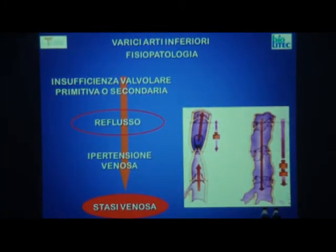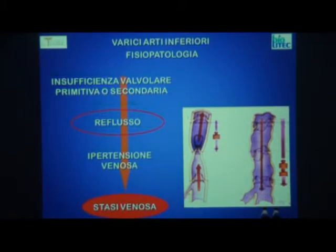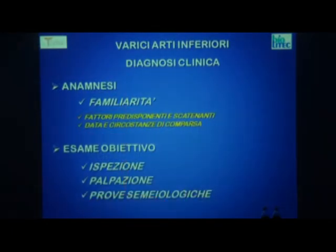Che cosa succede? Quando c'è un'insufficienza valvolare che possa essere primitiva o secondaria, per esempio ad eventi trombotici, le valvole non tengono più, quindi il sangue refluisce di nuovo verso il basso determinando, nelle zone dei clivi degli arti inferiori, una stasi venosa e quindi una ipertensione venosa.